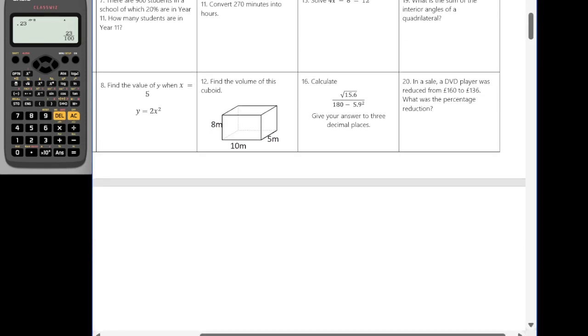Question seven. There are 900 students in a school of which 20% are in year 11. How many students are in year 11? So I want 20% of 900. So I'm going to do 20% is, well, I'm going to go 20 times by 900 divided by 100. So that's going to become 20 times by, actually let's put that as a fraction to start with. So 20 times by 900 divided by 100. So that gives me 180.